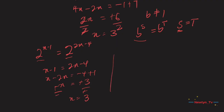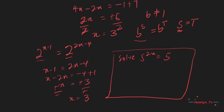Now you can try this on your own: solve 5 exponent 2x equal to 5 exponent (3x plus 2). Pause the video and try to do this on your own.